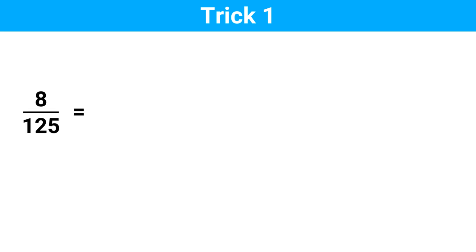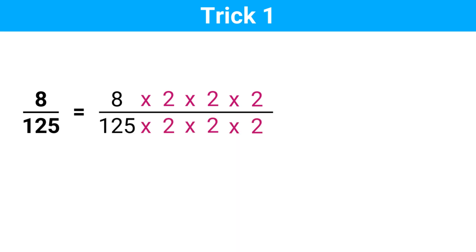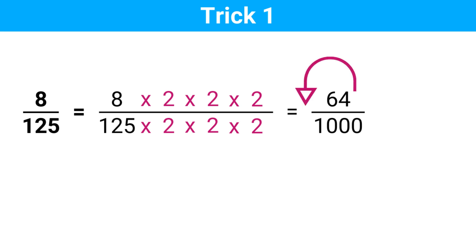Suppose you have to divide 8 by 125. Now we multiply the numerator by 2, and 2, and again by 2, and we do the same for the denominator as well. So 8 times 2 is 16, 16 times 2 is 32, and 32 times 2 is 64. And 125 times 2 is 250, 250 times 2 is 500, and 500 times 2 is 1000. Now it's pretty easy — if we move the decimal point three places to the left, the answer is 0.064.